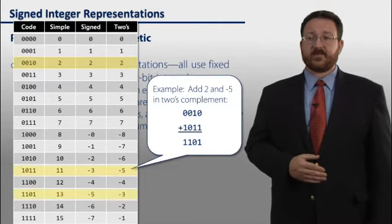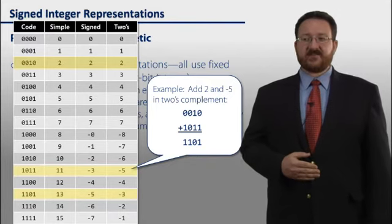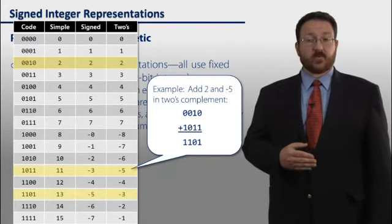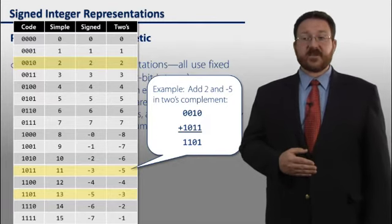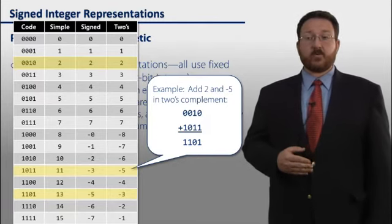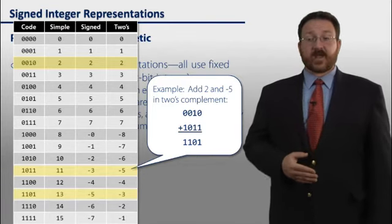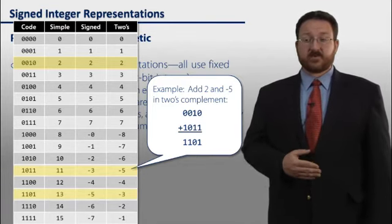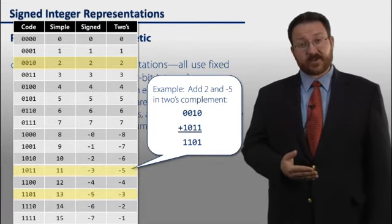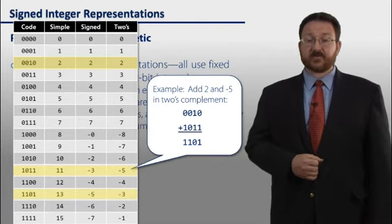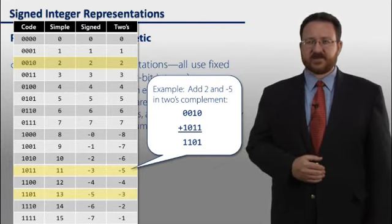So let's look at an example. If I try and add 2 and negative 5 in 2's complement, I write out the representation of 2 as 0010, and the representation of negative 5 as 1011. And I can add these together by column, and what I get is 1101, which is the representation of negative 3. So this is very convenient, and CPU developers really like this. The unification of addition and subtraction really simplifies the hardware.